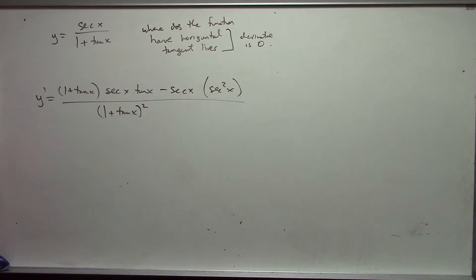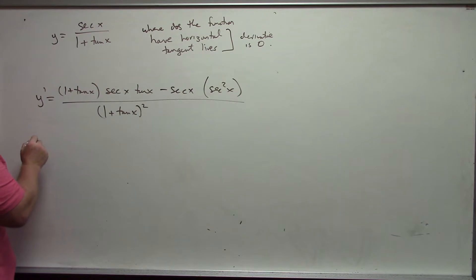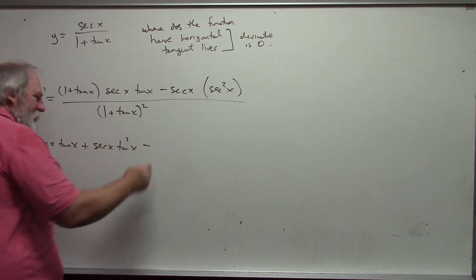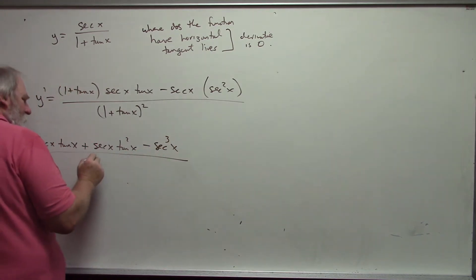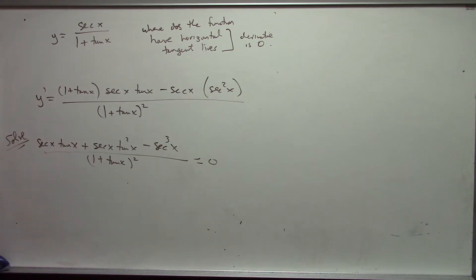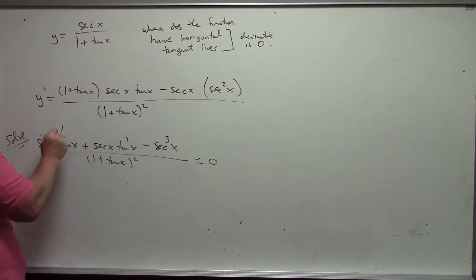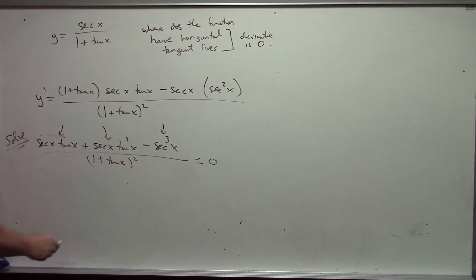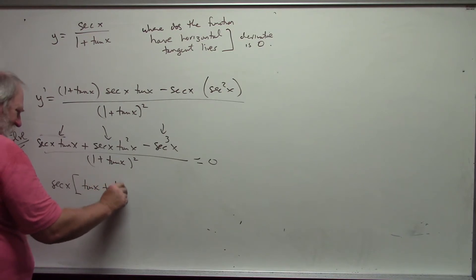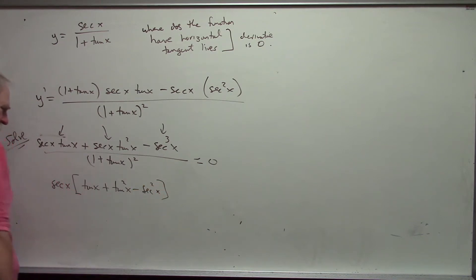I want to know where this derivative is 0. Do not set equal to 0 on the derivative line — we need a new line. Distributing the numerator gives secant(x)tangent(x) plus secant(x)tan²(x) minus sec³(x), over (1 plus tangent(x))², set equal to 0. Multiplying both sides by the denominator eliminates it. Each term in the numerator has a secant(x), so factoring that out gives: secant(x) times (tangent(x) plus tan²(x) minus sec²(x)) equals 0.